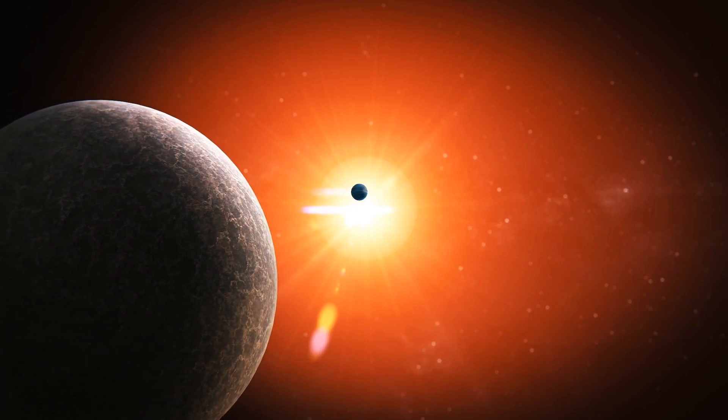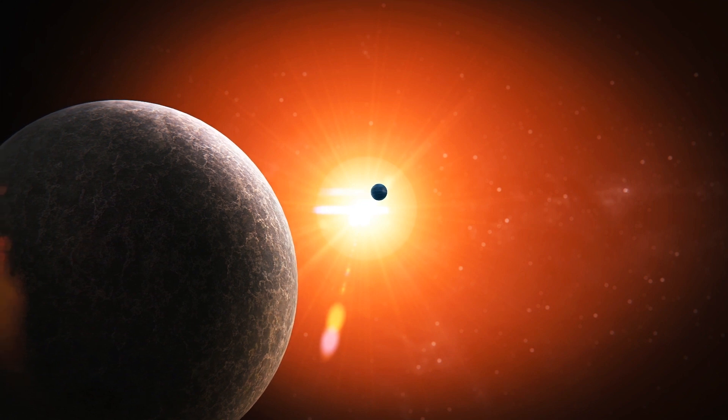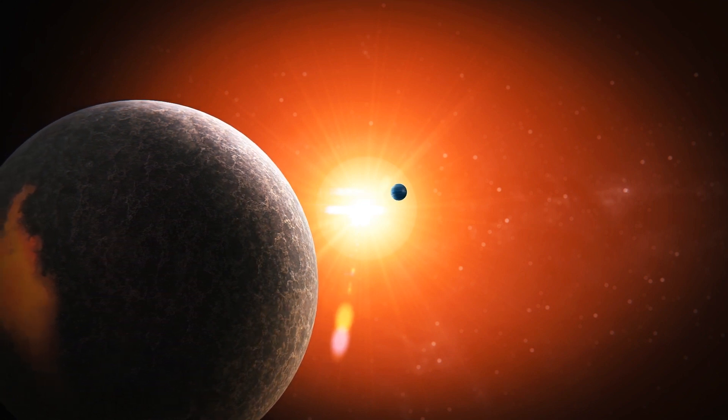Scientists have found two exoplanets orbiting a red dwarf around 120 light-years from Earth, including a super-Earth.